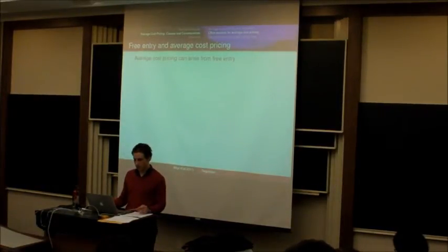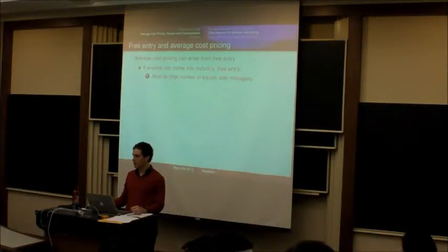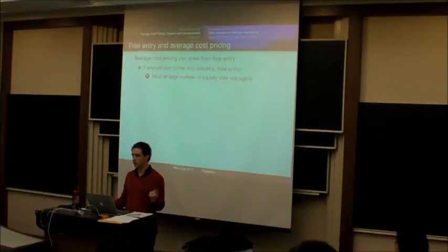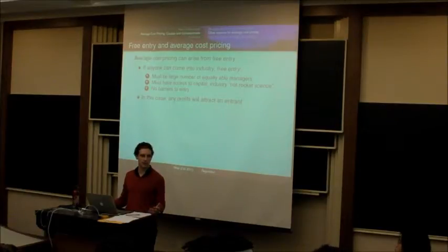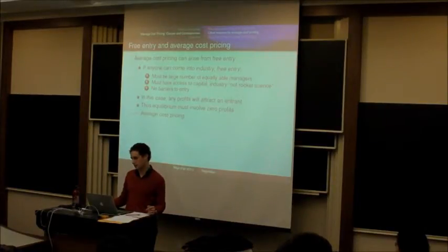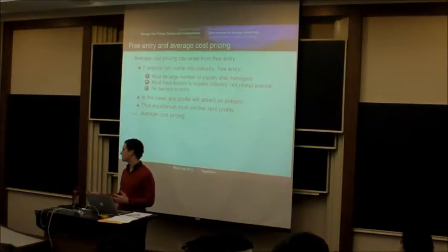Average cost pricing can also arise not just from explicit government regulation, but also by the natural operation of the market. If anyone can come into an industry, it will be free entry in the sense we talked about earlier in the course. Remember what the conditions for that were: there had to be a large number of equally able people who could manage a firm, they must have easy access to capital, and entering the firm doesn't require any special knowledge or thing that is really difficult to acquire. It can't be rocket science, and there can't be any explicit government barriers to entry. In those cases, any time a firm is making a profit, they're going to attract someone else to enter. And that will drive down the prices to the point where they're equal to average cost, when there's no profit being made. That's what we talked about several weeks ago. And that basically leads to average cost pricing.